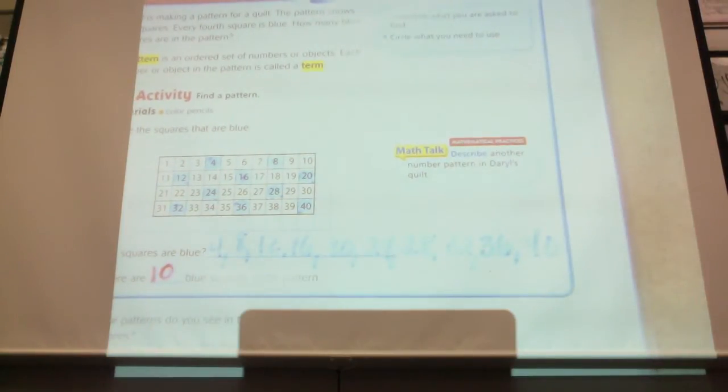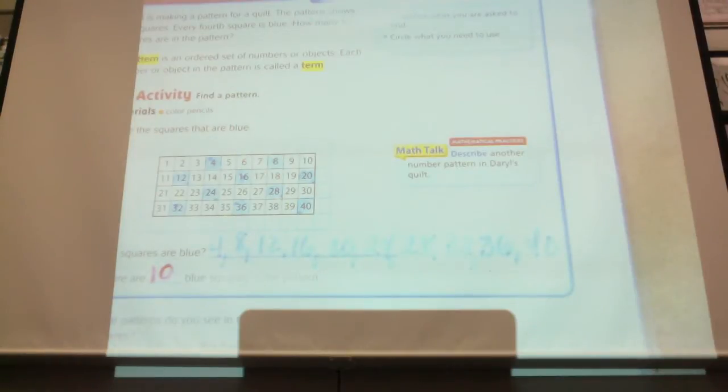Is there anyone who didn't count them and found them a different way? How did you find the number, Brian? Because I had a forty at hand, so I know four times ten equals forty. Right. So you can divide forty divided by four because it's every fourth one. You could actually divide forty by four and you would know that there's going to be ten. But in this case, they want to know which square is going to be colored. Okay.